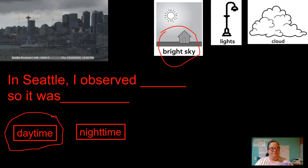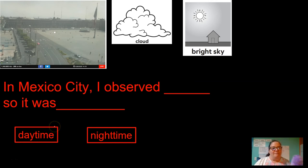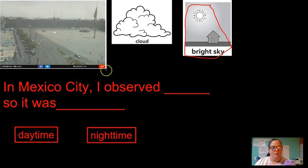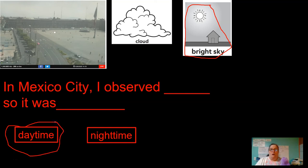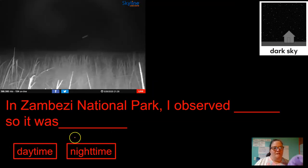Can you guys say this one with me? Rosie, will you help me out? In Seattle, I observed bright sky, so it was daytime. Let's do the next one. In Mexico City I observed — clouds or bright sky? We want to just use bright sky because clouds can be there during the day or at night, and bright sky tells us it's daytime. In Mexico City, I observed bright sky, so it was daytime.